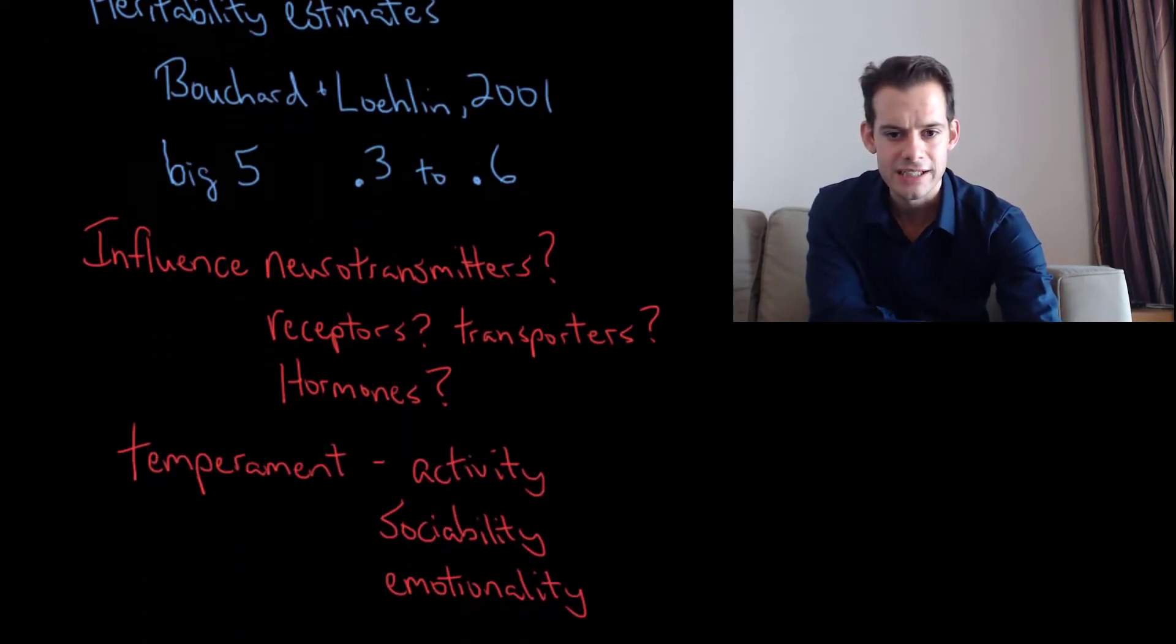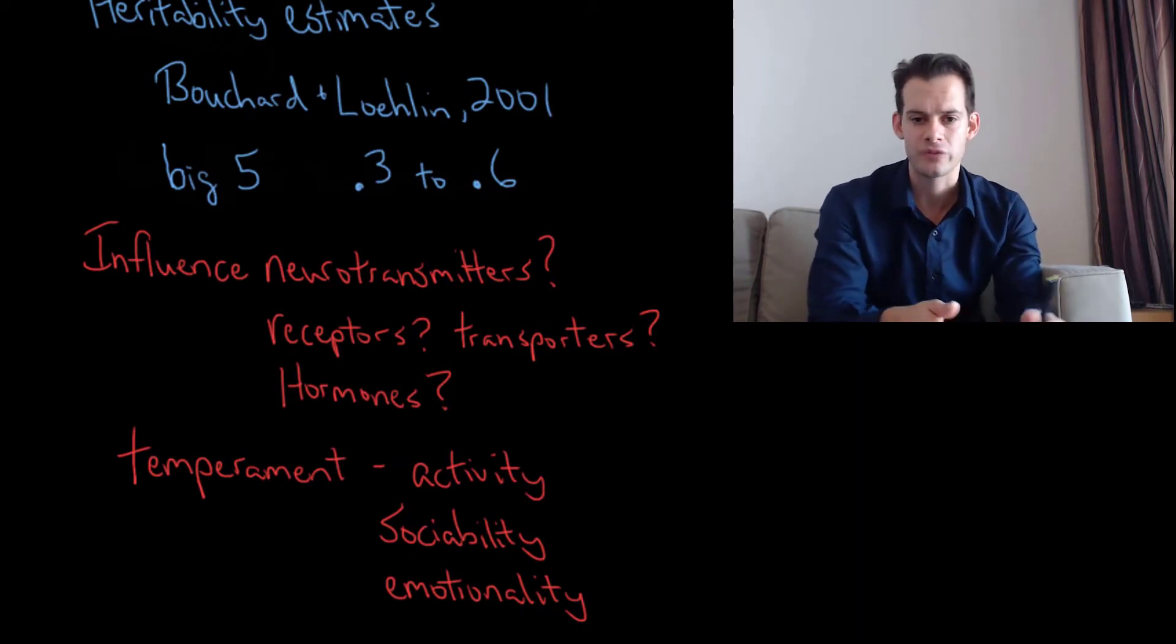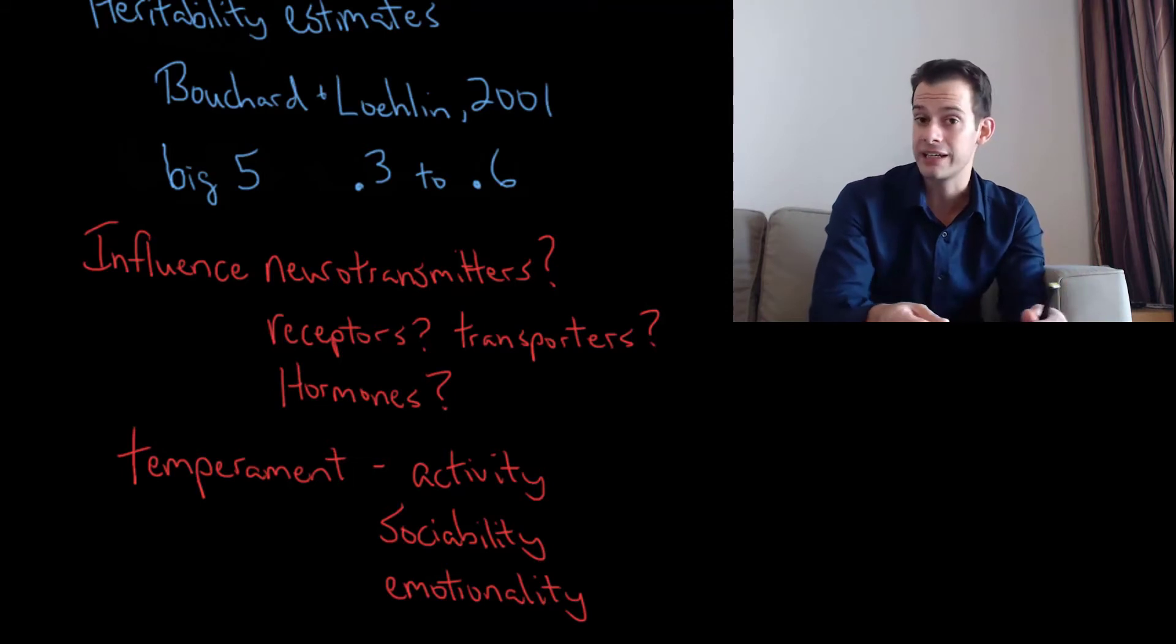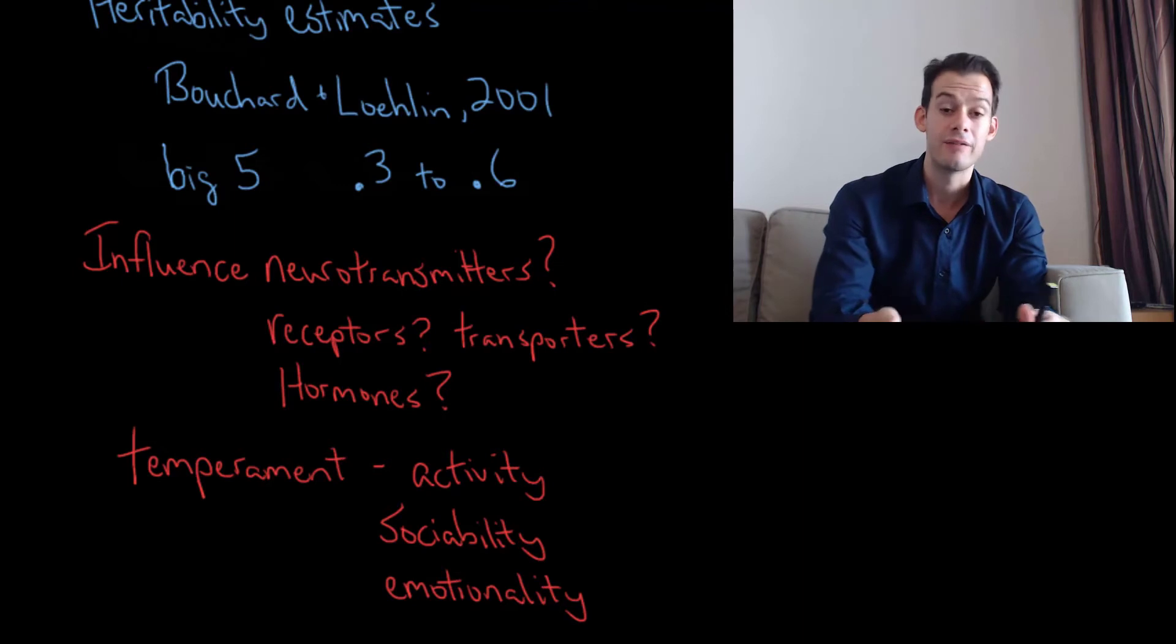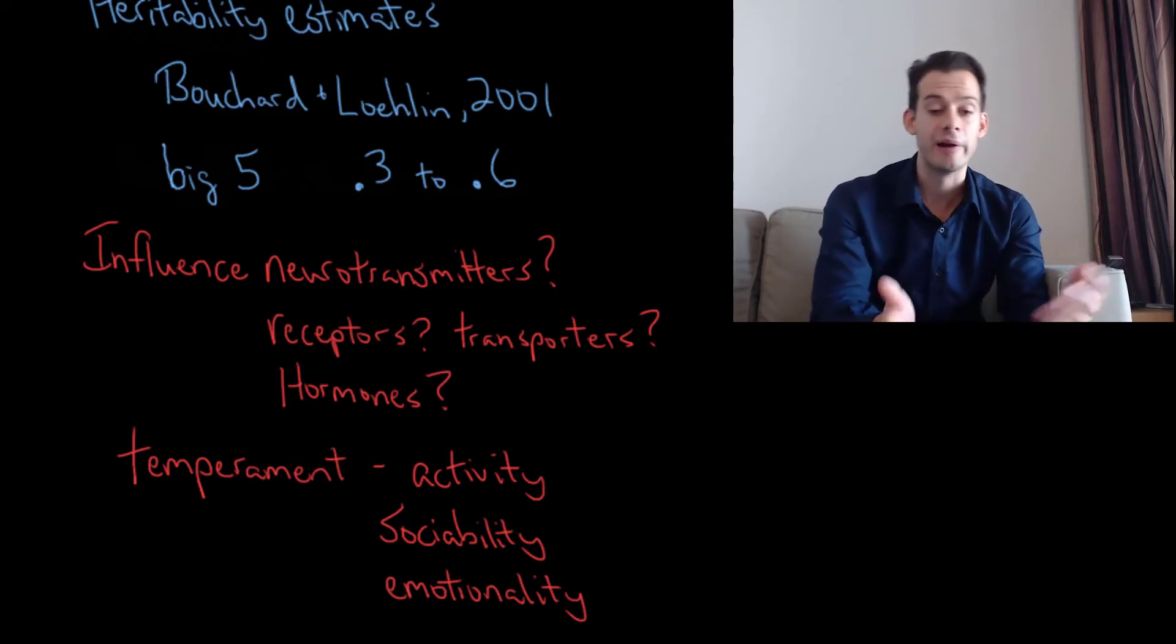Another way we can see differences in personality that seem to be due to genes is looking at temperament. Temperament refers to the personality of very young infants who really haven't had much environmental experience yet. We see differences in infants in their levels of activity, sociability, and emotionality, and these differences are apparent from a very young age. We also see these differences between children raised by the same parents. So we can assume those environments are fairly similar, yet one child is very emotional and prone to tantrums and screaming and crying and the other is a very calm child. That would suggest it's not the parental environment causing those differences, so it's more likely to be something caused by genes.